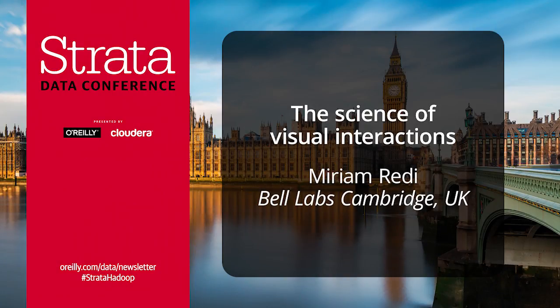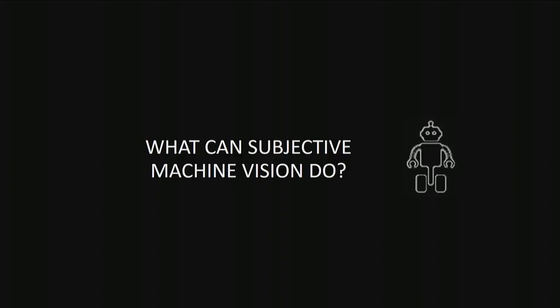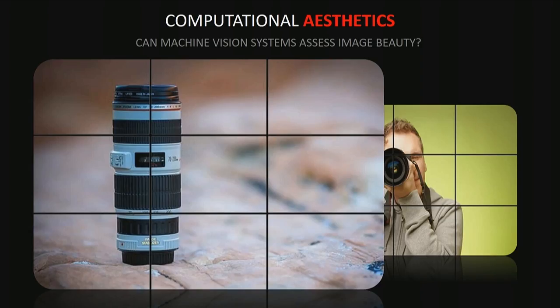Let me give you a couple of examples of what we can do with these subjective machine vision techniques. Take computational aesthetics, for example. This is one of the most popular branches of subjective machine vision, and it's about designing systems that, given an image, can automatically score it in terms of its beauty or photographic quality and aesthetic appeal. In general, this is done by operationalizing photographic theories into visual features within a computer vision framework.